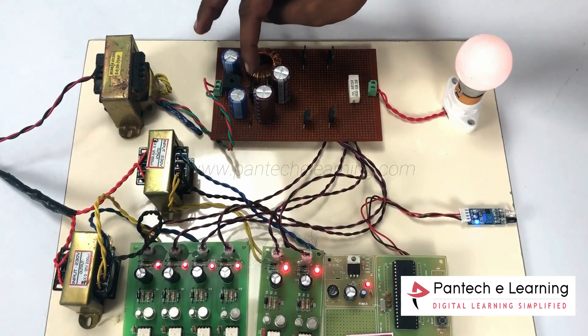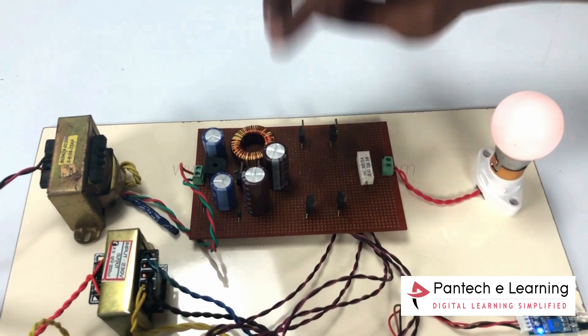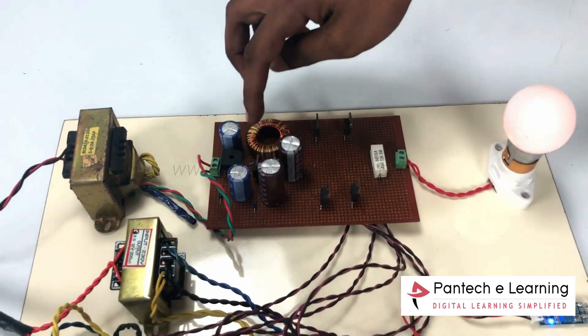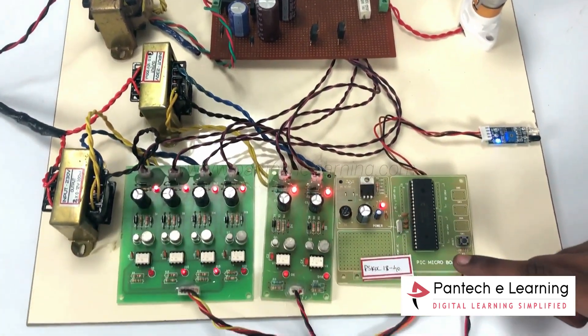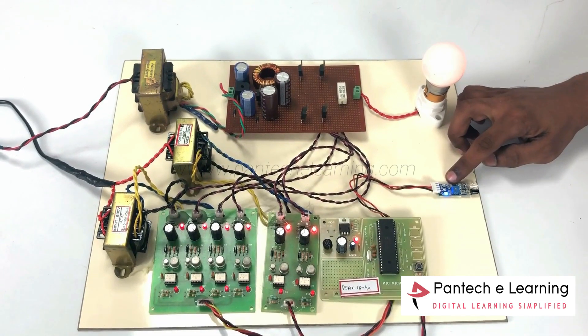Here we have the MOSFET switches. This is also an inverter switch, and what we are doing is increasing the duty cycle by using the controller. The duty cycle will be increased with respect to the sensing value of the IR sensor.